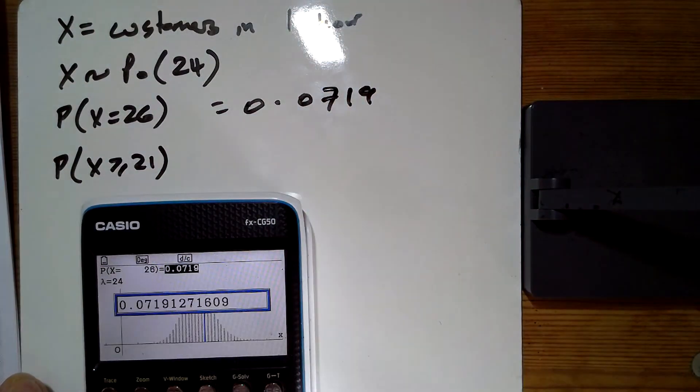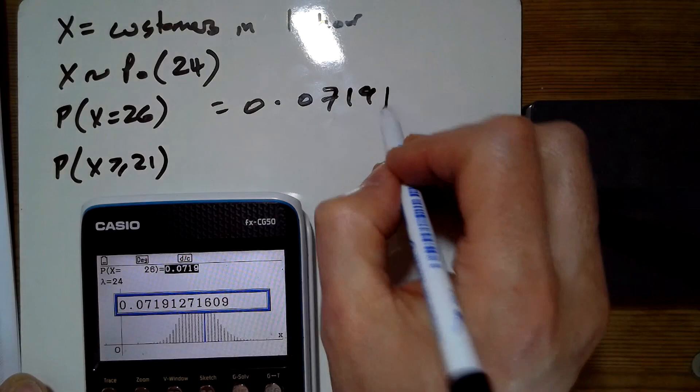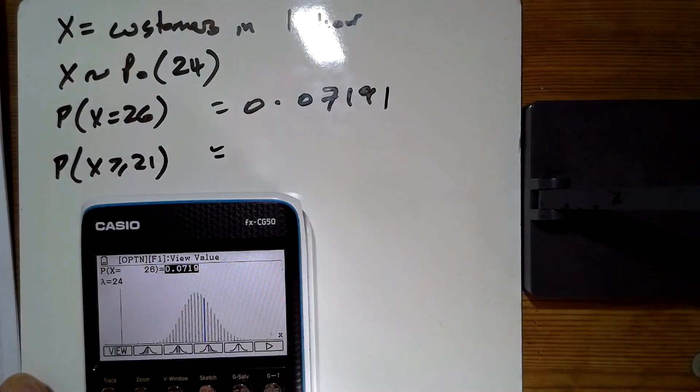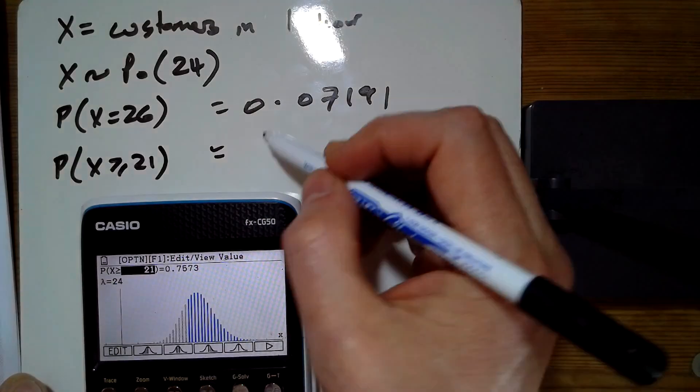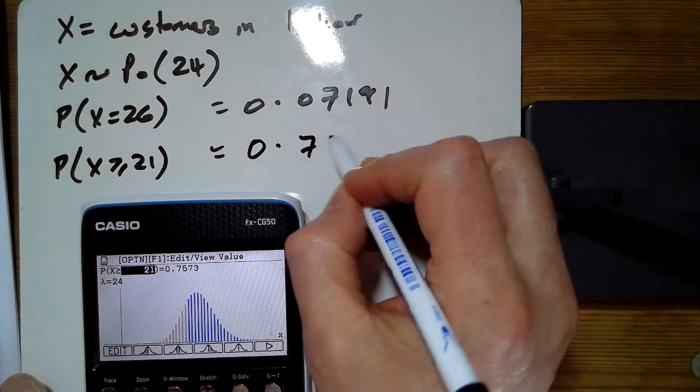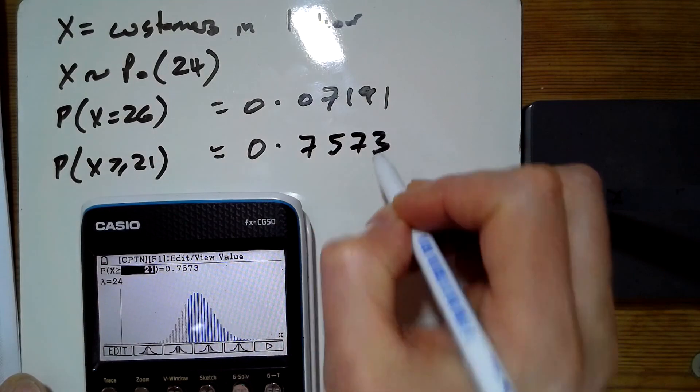0.07191. And greater than or equal to 21 is 0.7573.